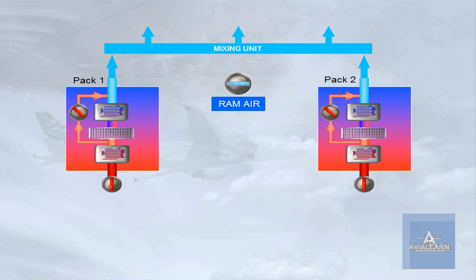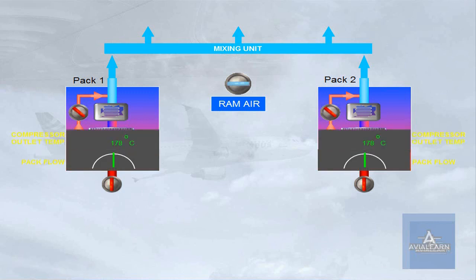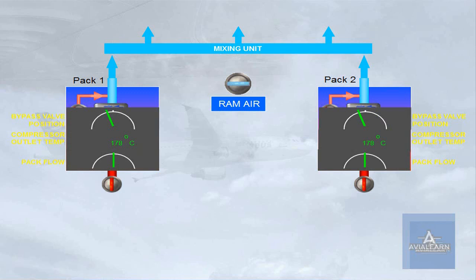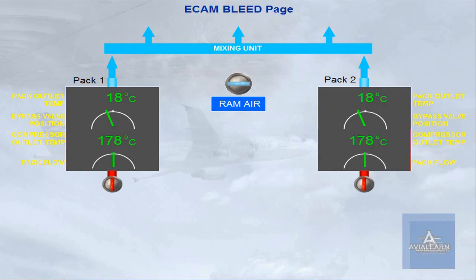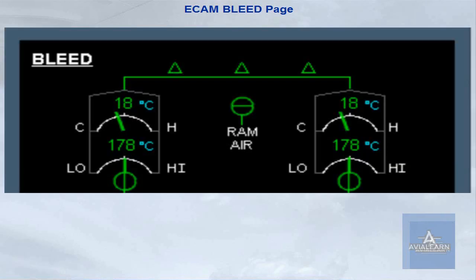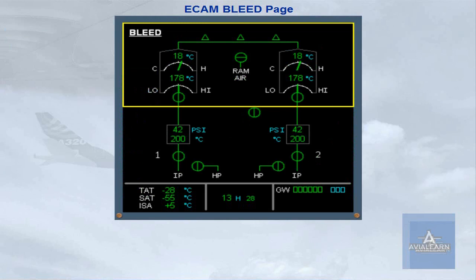Various pack parameters are monitored by ECAM: pack flow, compressor outlet temperature, bypass valve position, and pack outlet temperature. These parameters, along with the valve positions, are displayed on the upper part of the ECAM bleed page.